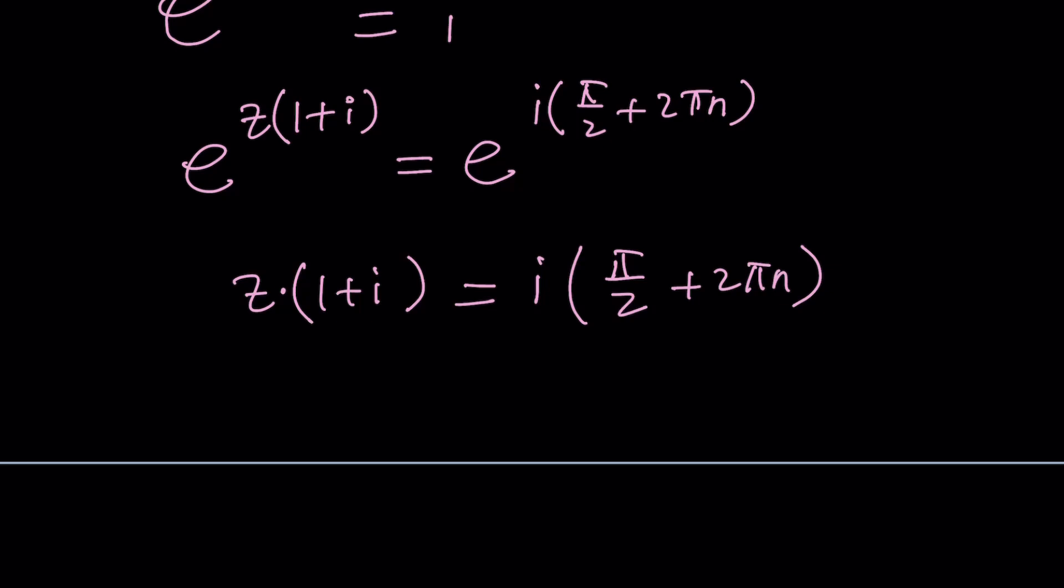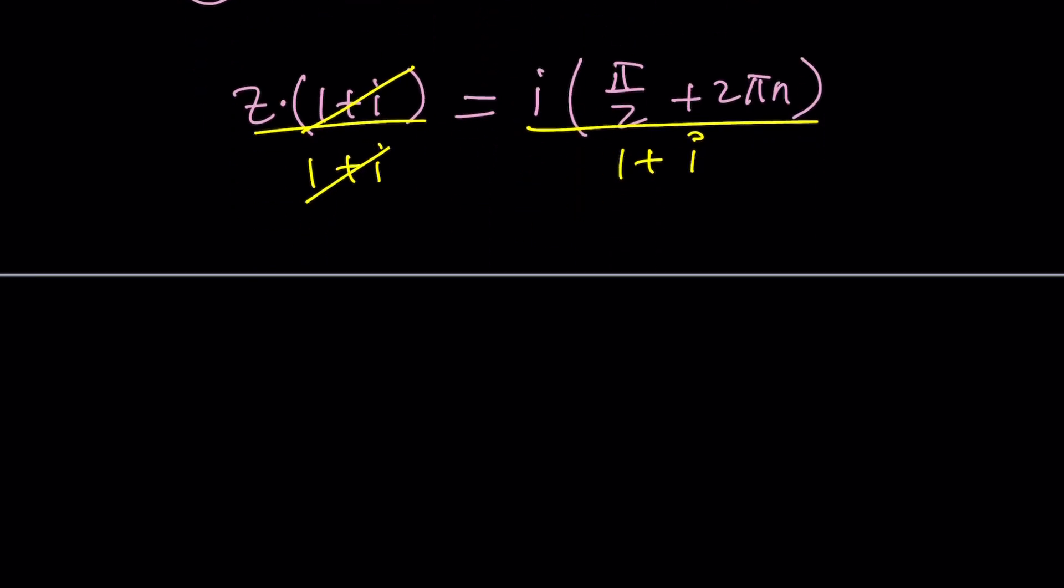And then again you don't need to replace z with anything just divide by 1 plus i and you should be good make sense. So divide by 1 plus i divide by 1 plus i. 1 plus i is not 0 it cancels out leaving us with z equals i times pi over 2 plus 2 pi n divided by 1 plus i.